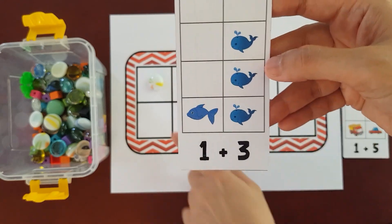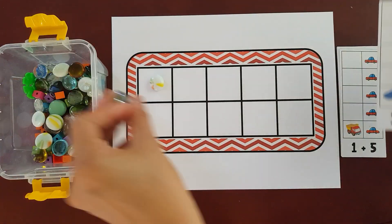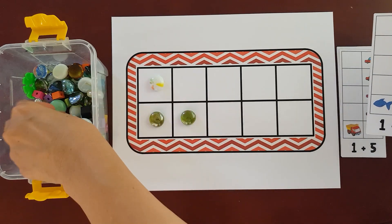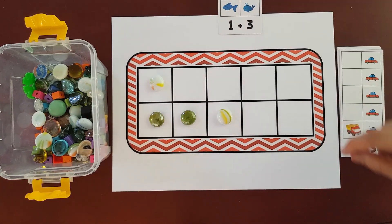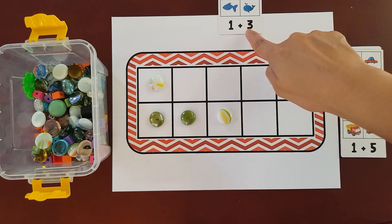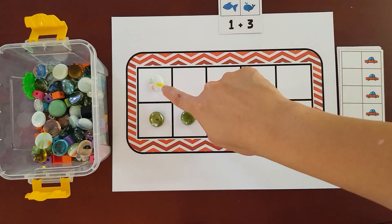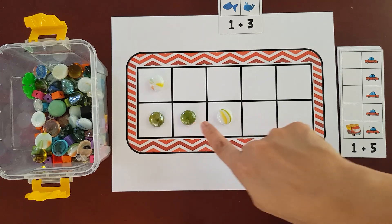So I'll get 1, 2, and 3. And then I'm gonna count them all together. So that means 1 plus 3 equals 1, 2, 3, 4.